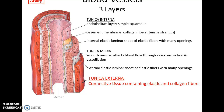Blood vessels have three main layers: tunica interna, tunica media, and tunica externa. In an artery, the tunica interna consists of a thin endothelium layer of simple squamous cells, followed by a basement membrane and then an internal elastic lamina — a sheet of elastic fibers with many openings. That's followed by the tunica media with smooth muscle tissue that can control the diameter of the blood vessel, then the external elastic lamina, another sheet of elastic fibers. These elastic fibers allow blood vessels to stretch — arteries are stretchy.